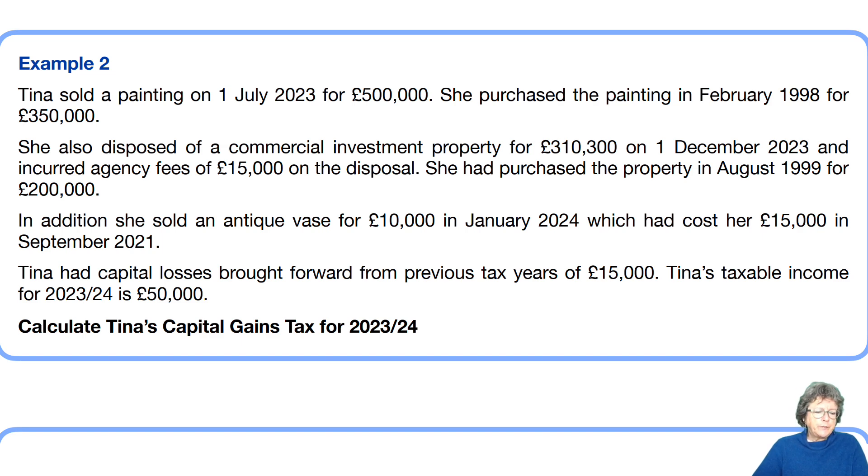In example two, Tina sold a painting on the 1st of July 2023 for £500,000 that she bought in February 1998 for £350,000. She also disposed of a commercial investment property for £310,300 in December 2023 and she incurred some agency fees and she bought that property in August 1999 for £200,000. In addition, she sold an antique vase for £10,000 which cost her £15,000 and she has some losses brought forward from the previous tax years of £15,000 and her income for 2023-24 is £50,000.